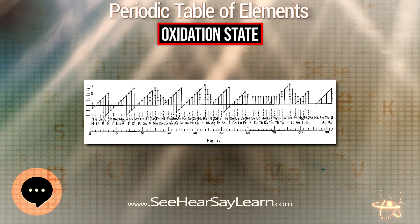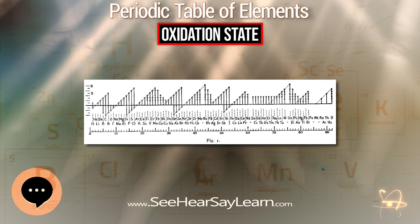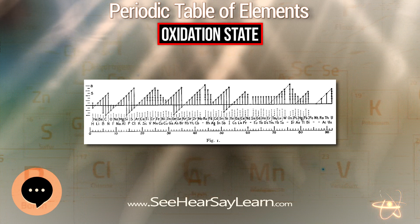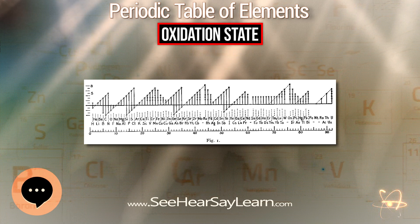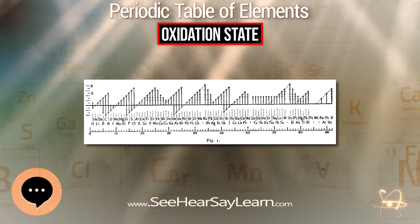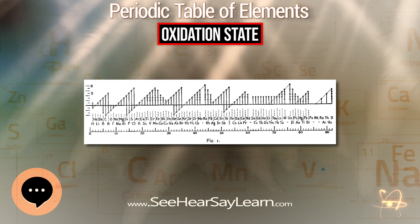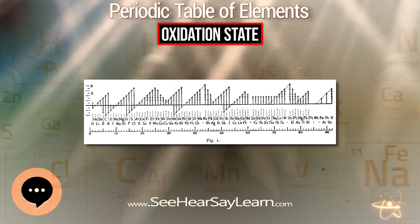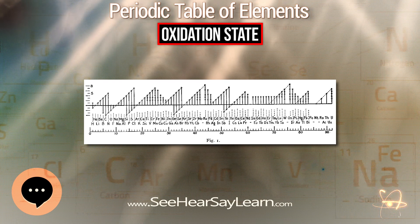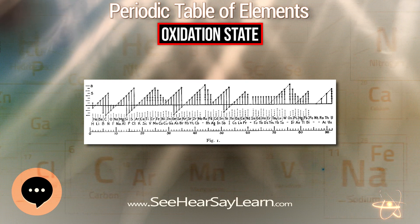Langmuir used this format in one of the early papers about the octet rule. The periodicity of the oxidation states was one of the pieces of evidence that led Langmuir to adopt the rule.